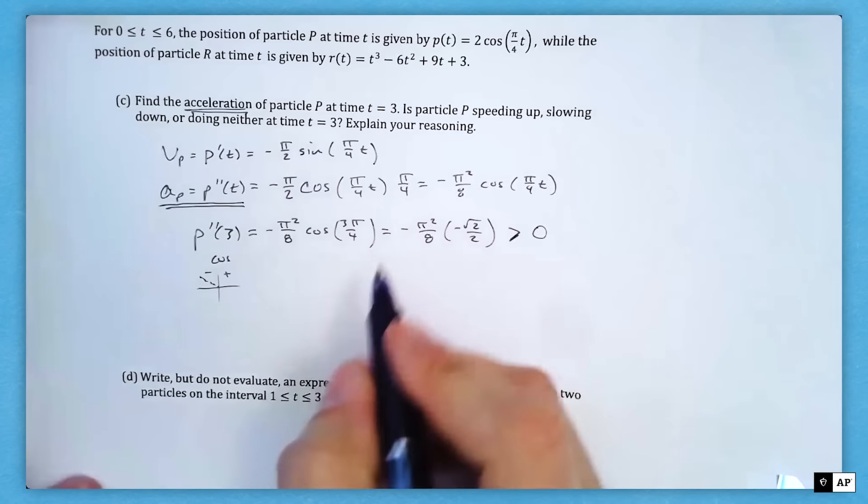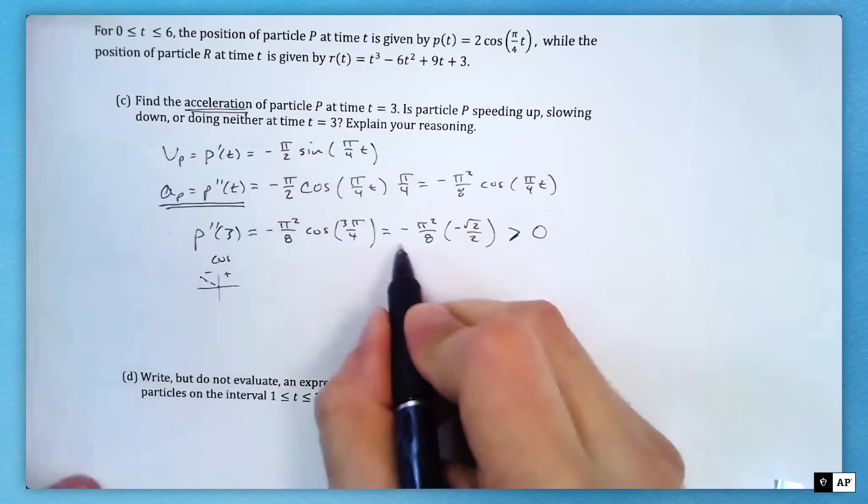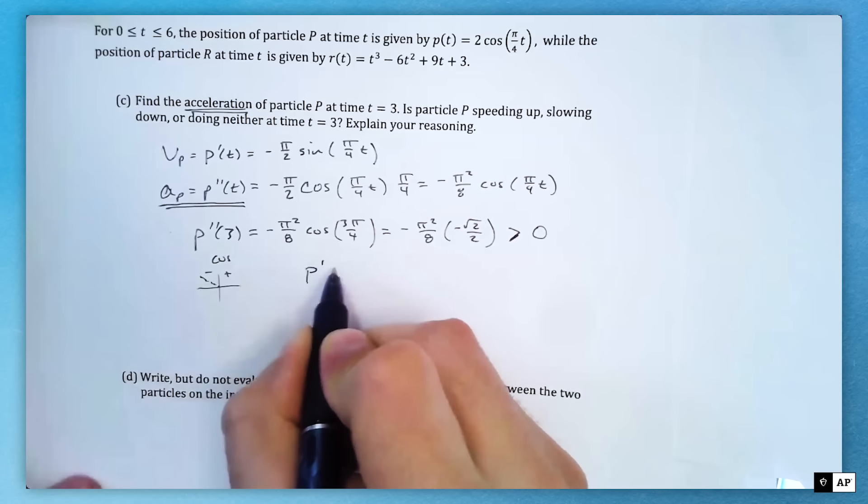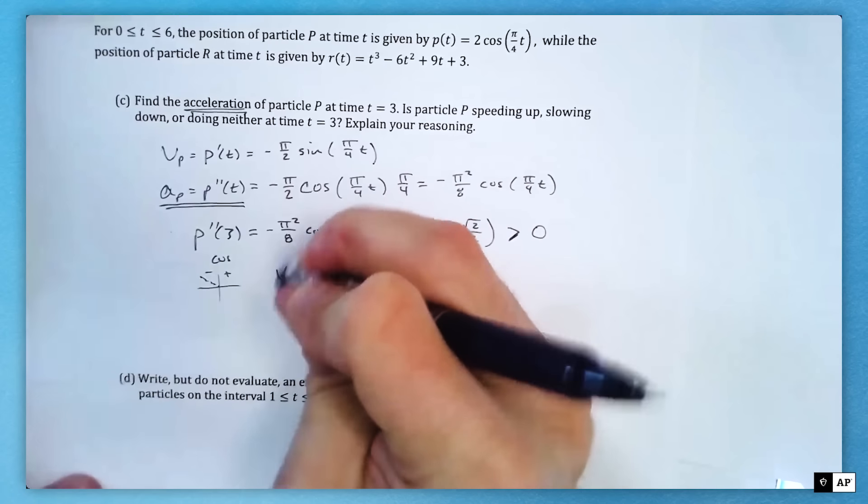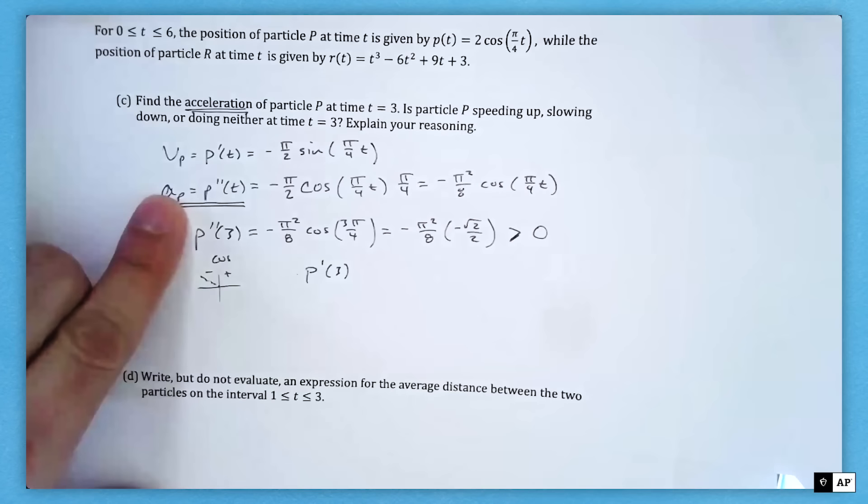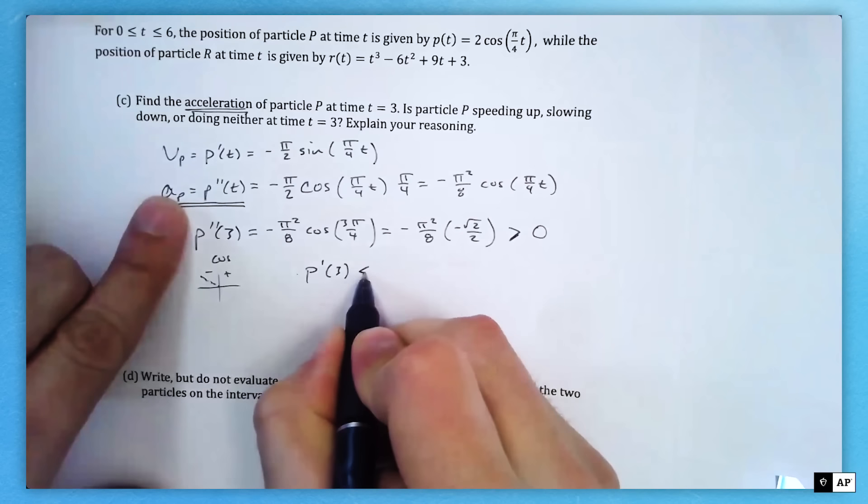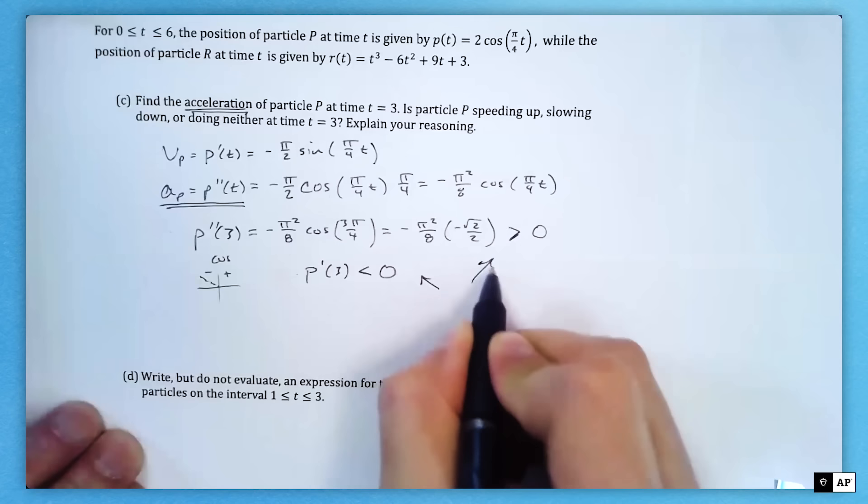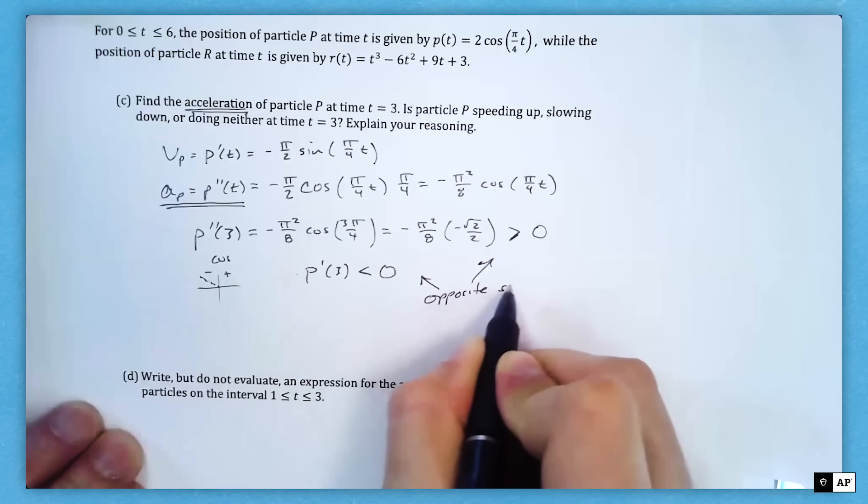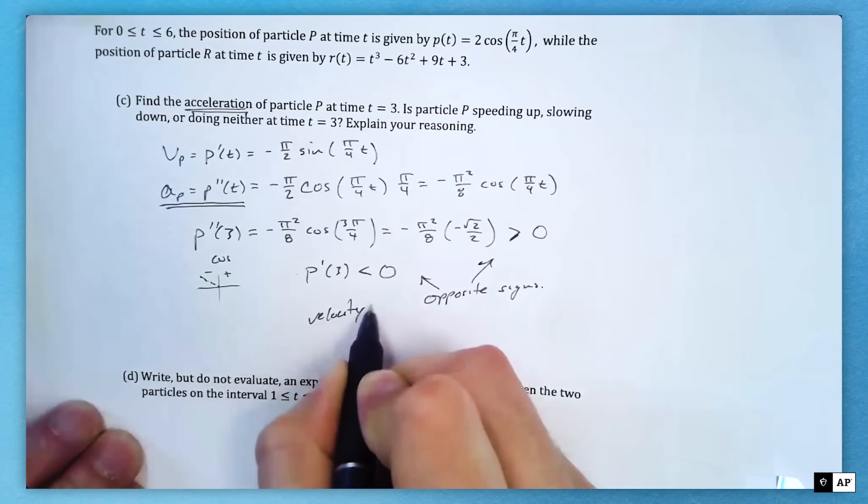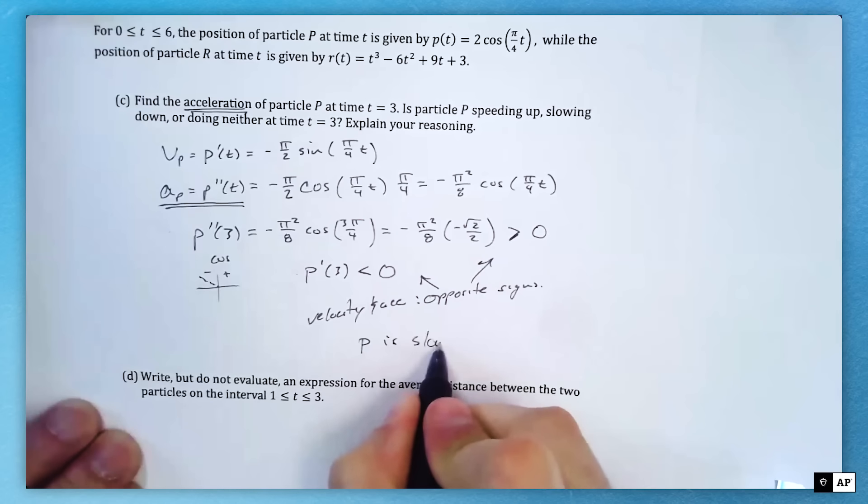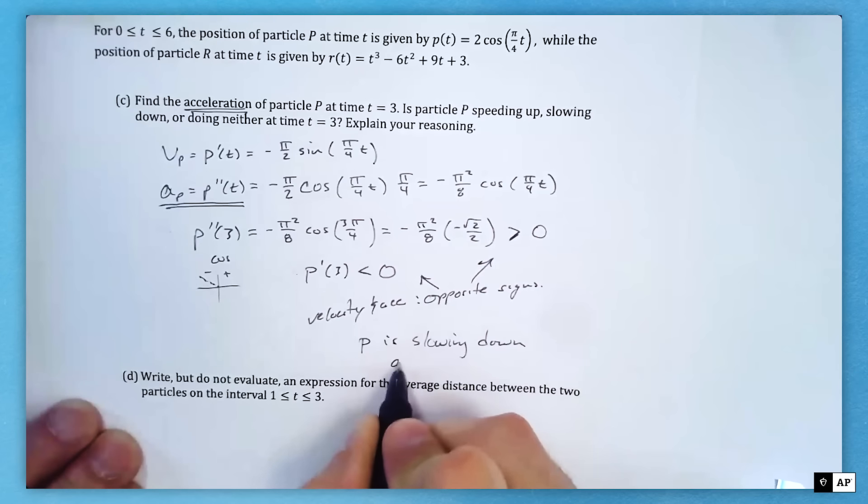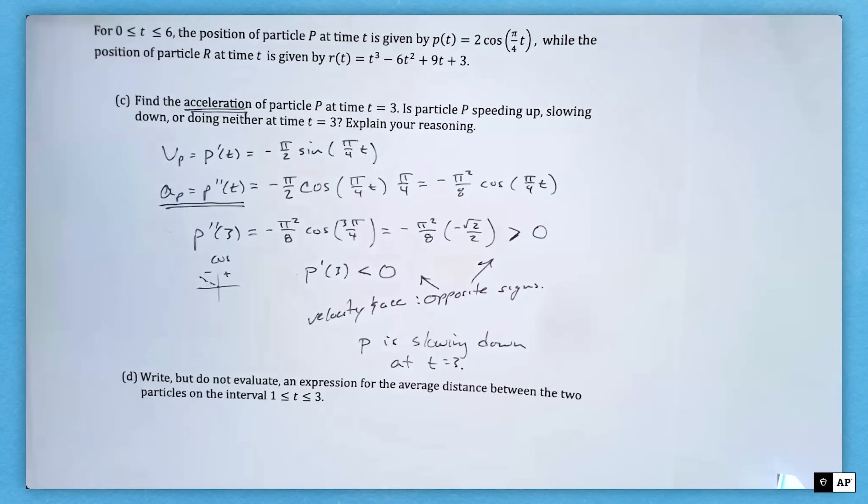I picture the circle, the unit circle. I know I'm in the second quadrant, and cosine is negative there. I guess they want us to find the acceleration, so we do have to say negative. So we do have to know it's negative √2/2. And that is positive because it's a negative times a negative, so it's greater than zero. That's my reasoning. I've started to explain my reasoning. My acceleration is greater than zero. Going back, I know from part B that my velocity, P'(3), was less than zero. Yes, it was negative. And these are opposite signs. So velocity and acceleration are opposite signs, which means he is slowing down at time t equals 3.